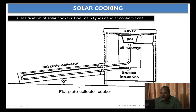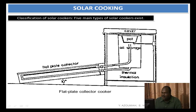You also have flat plate collector cookers, as simple as a flat plate solar dryer. You have the collector and some oil with a storage tank. The oil is heated up in the collector and taken back to the storage, so the storage is always warm. Then you have your pot that you sort of put inside the oil and get your food cooked.